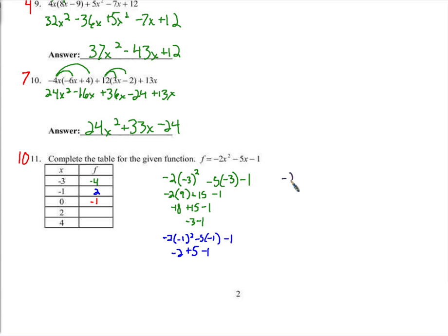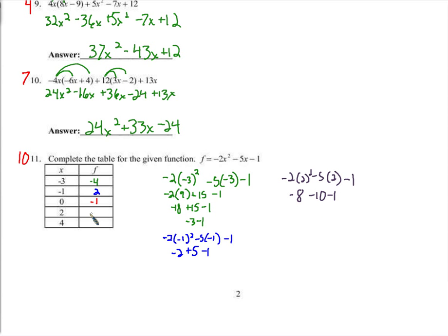For x equals 2: negative 2 times 2 squared, minus 5 times 2, minus 1. This will be negative because negative 5 times positive is negative. 4 times negative 2 is negative 8, minus 10, minus 1. Negative 18 minus 1 is negative 19.